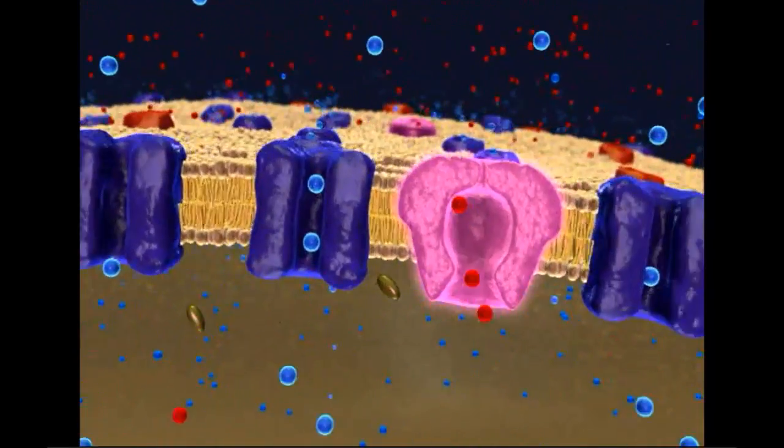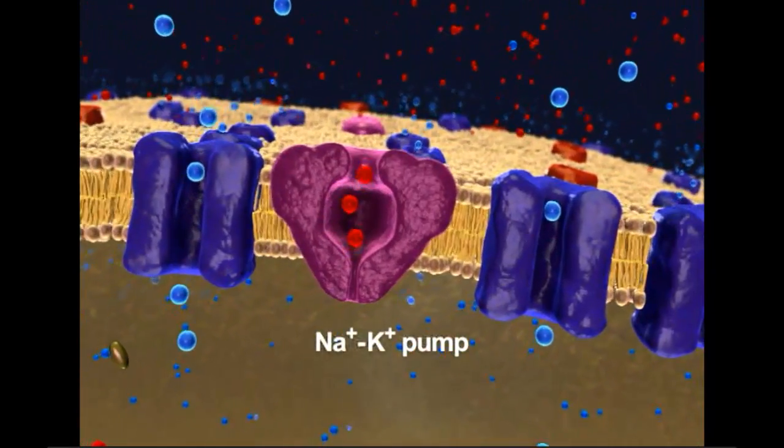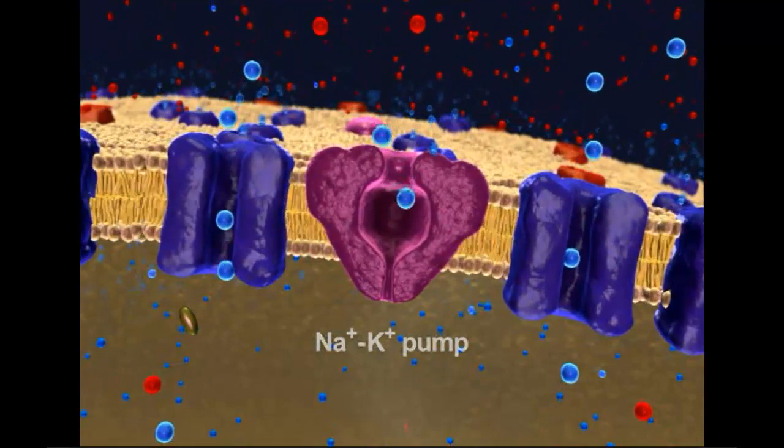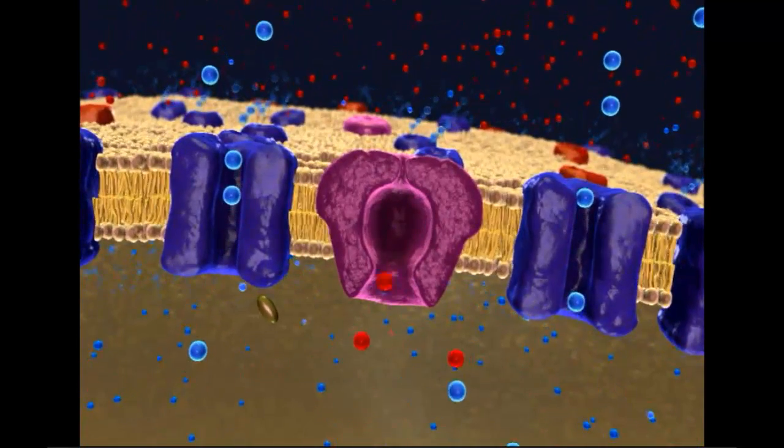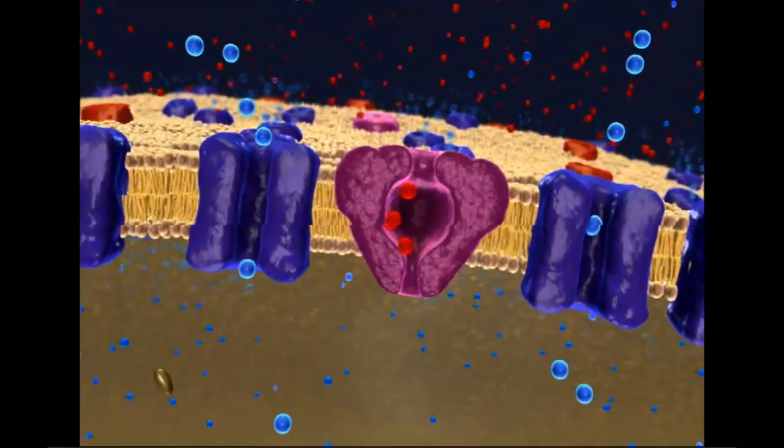Sodium-potassium pumps actively transport sodium ions out of the neuron and potassium ions back in, compensating for the sodium and potassium leaks.